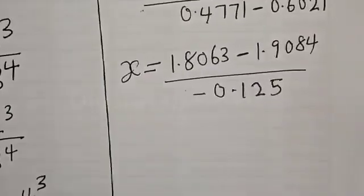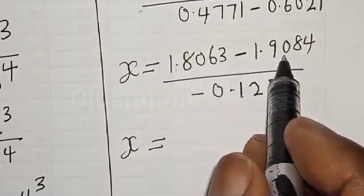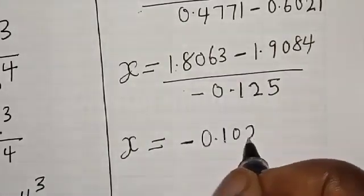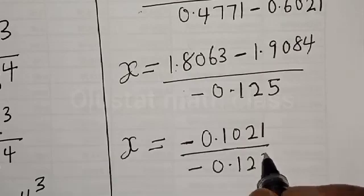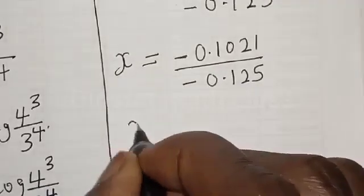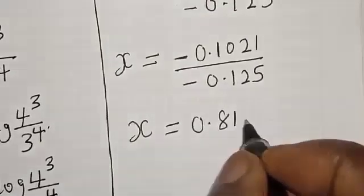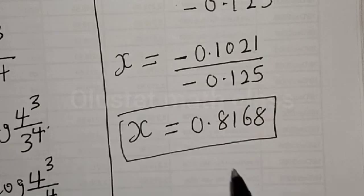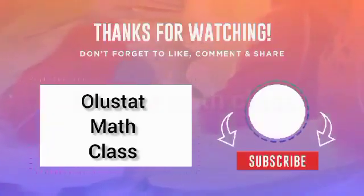Our numerator becomes 1.8063 minus 1.9084, which is minus 0.1021, divided by minus 0.125. Therefore our final answer is x is equal to 0.8168. If you have enjoyed the class, please don't forget to like, share, comment, and subscribe. If you have a better method, kindly let us know. Thank you so much.